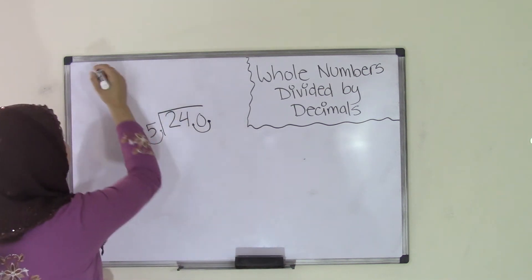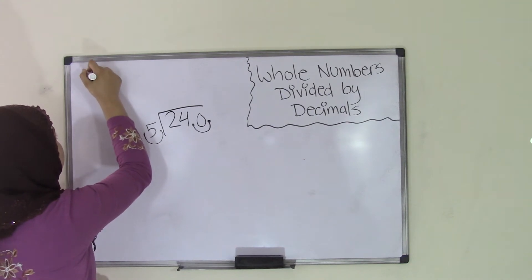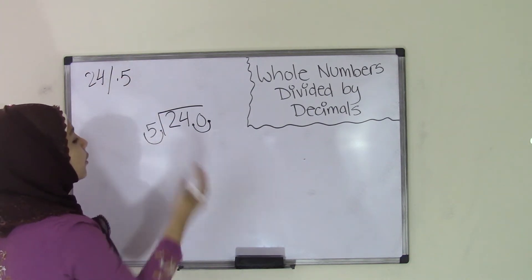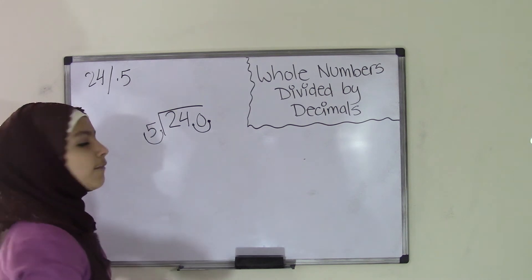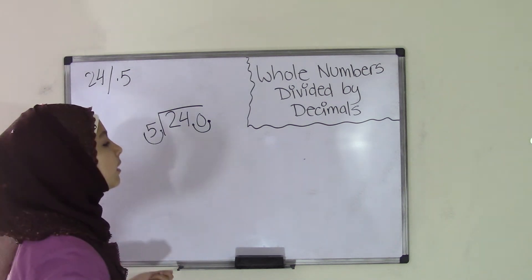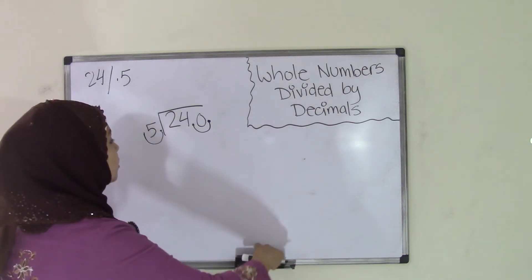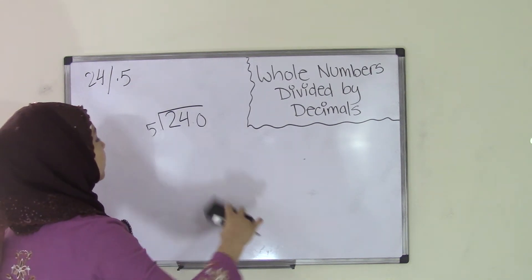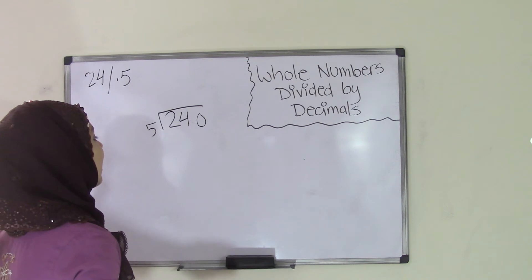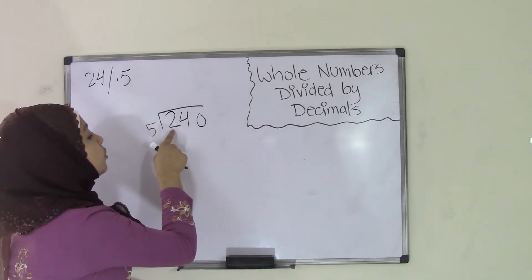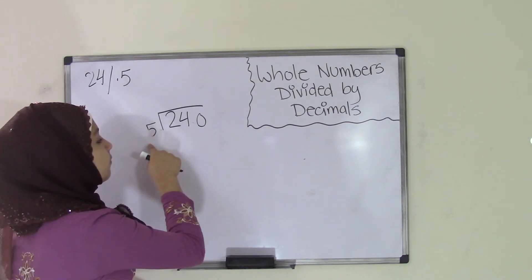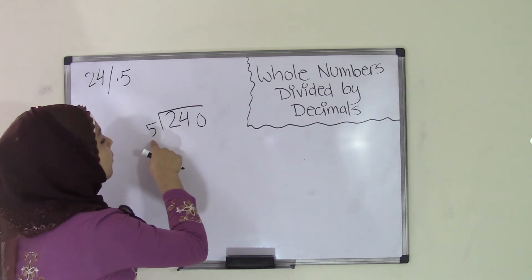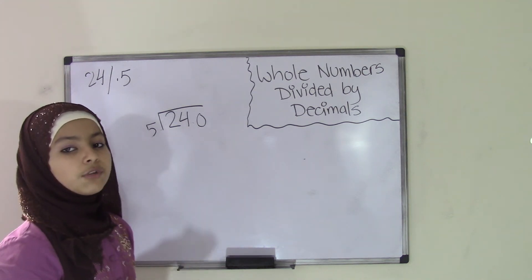Our original problem was 24 divided by 0.5. So now our new problem is 240 divided by 5, which are both whole numbers, and it's really simple to divide whole numbers. So now if I just go ahead and cancel these gaps out in between them. All right, so now we have 240 divided by 5. Now remember, we can't just do 2 divided by 5 because 2 is less than 5, so we're going to have to do 24 divided by 5. How many times does 5 go into 24? Let's find out.